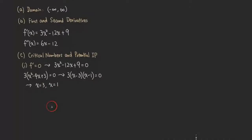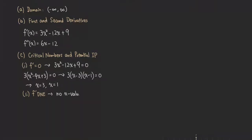According to the definition of critical numbers, we also check where f' is undefined. Since f' is a polynomial, it's defined for all x, so there is no value that makes f' undefined. Therefore, we only have two critical numbers: x equals 1 and x equals 3.